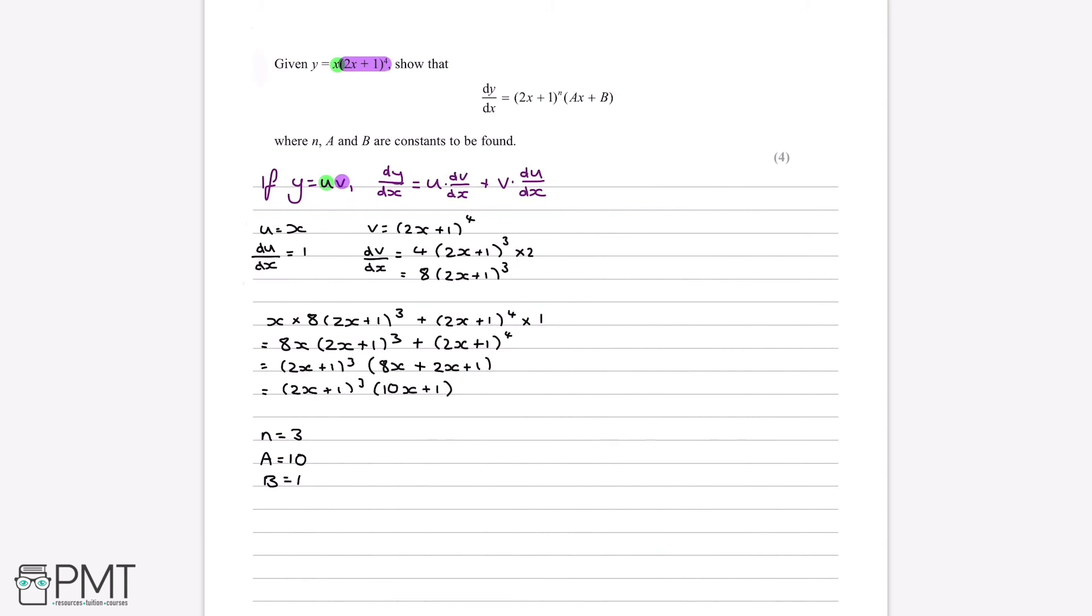Now, in this question, on the mark scheme, the places that we get all our marks is, mark number 1 is a method mark, and it comes from applying the product and the chain rule on this expression. We can say mark 1 comes from here. Now, the second mark comes from substituting this into the formula, and therefore ending up with this.